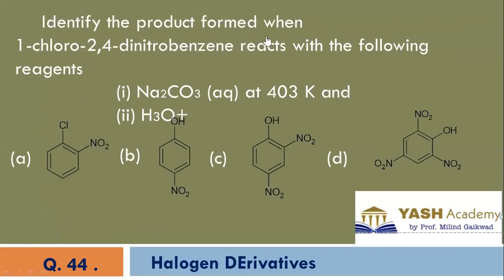Identify the product formed when 1-chloro-2,4-dinitrobenzene reacts with following reagents. C is the product.